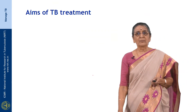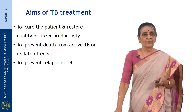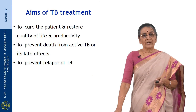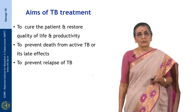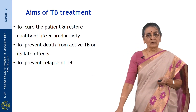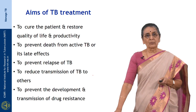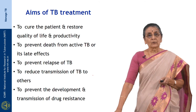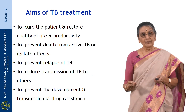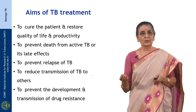The main aims of TB treatment are to cure the patient and restore quality of life and productivity, to bring down mortality and morbidity from tuberculosis, and from the patient's point of view, to prevent relapse. So the four most important aims from the patient's perspective are: cure, restore quality of life, prevent death, and prevent relapses.